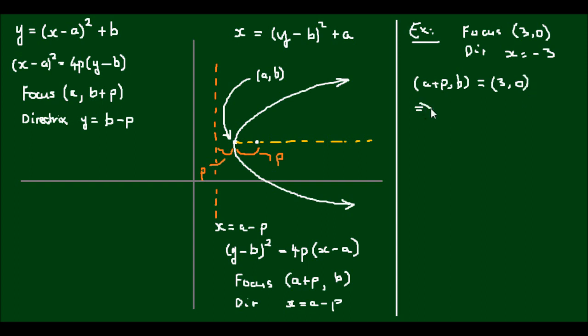So that means a plus p equals 3, and b equals 0. And the directrix given by x equals a minus p equals -3. So we have a case of simultaneous equations that we need to solve here. So I'm going to call this equation 1, and this equation 2.